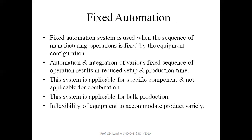The first type is fixed automation. In a fixed automation system, it deals with the production of only one single component or product. It is used when the sequence of manufacturing operations is fixed by the equipment configuration — only one product can be produced on this fixed automation line. The integration of various fixed sequences results in reduced setup time and production time. This system is used for bulk production, when there is a requirement for a high volume of any product.